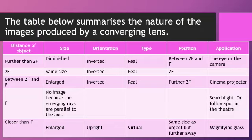If the distance of the object is closer than F, the size of the image is enlarged, it is upright, virtual, the position is on the same side of the object but further away. This is true for the magnifying glass.